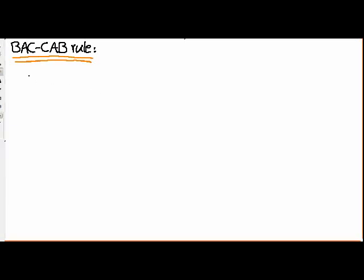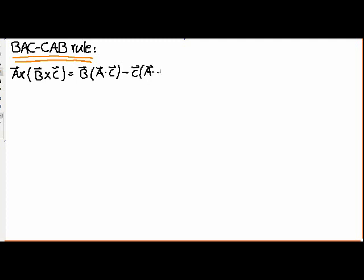Today I'm going to explain the famous BAC-CAB rule in vector products. Basically, the BAC-CAB rule says if I have a vector A and I cross product it by the cross product of B and C, then this equals B times the dot product of A and C — this is the BAC part — minus C times A dot B — this is the CAB part.